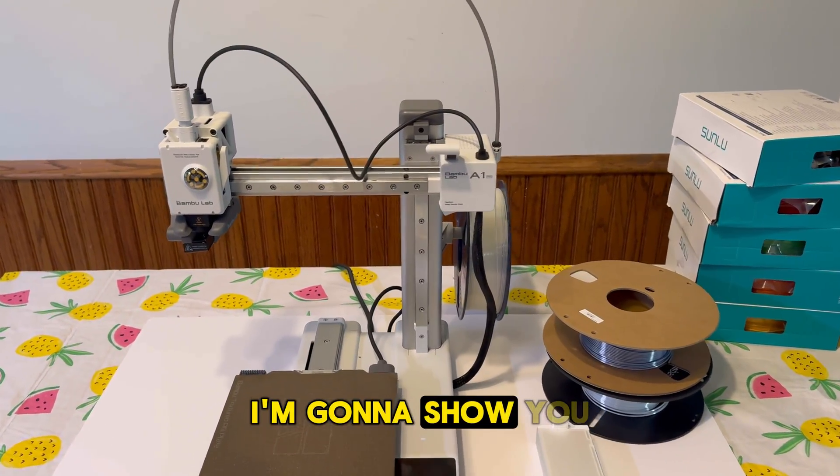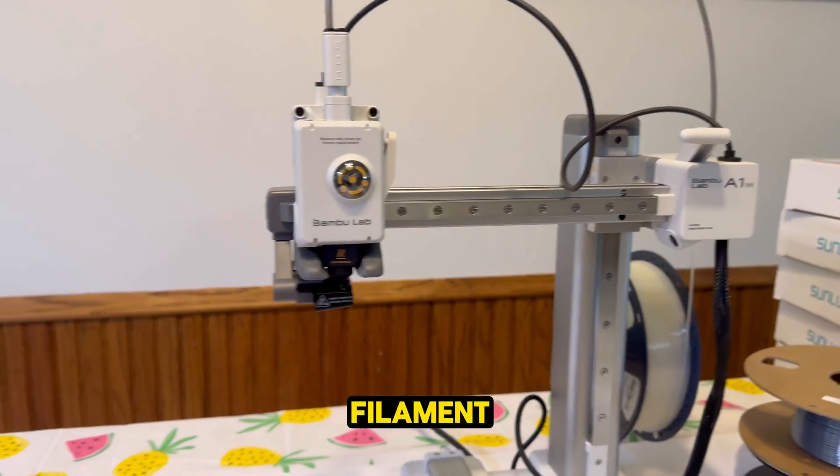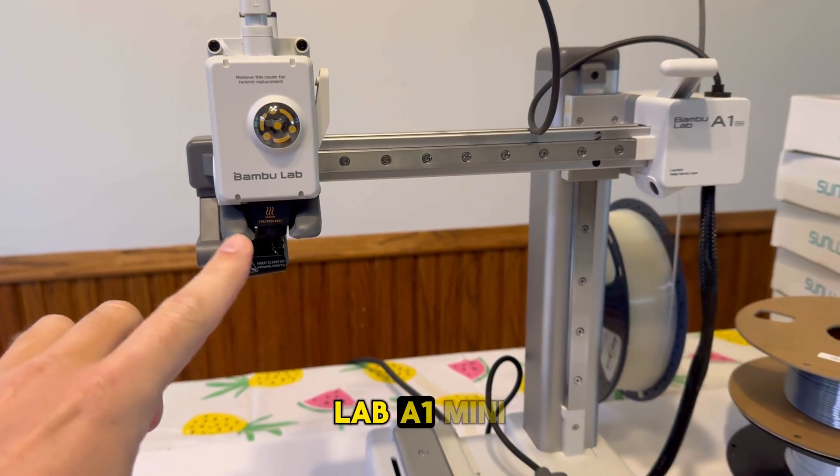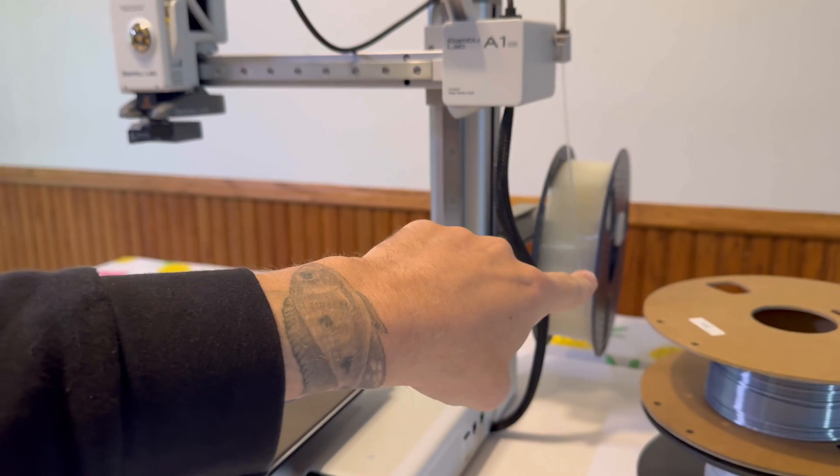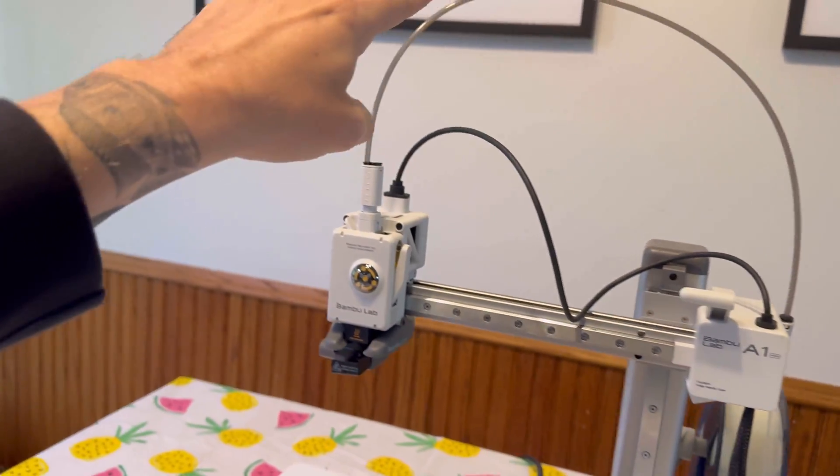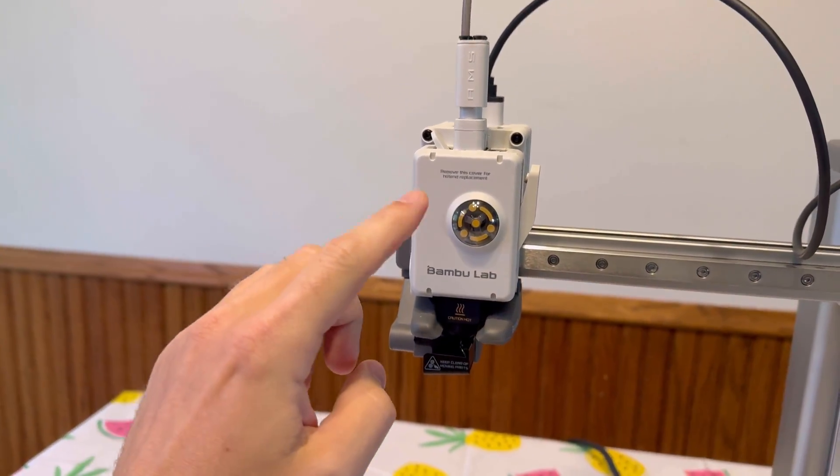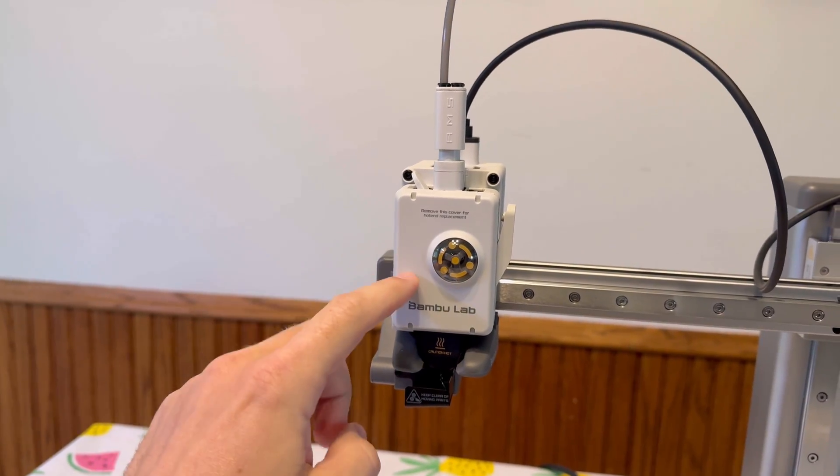What's going on guys? Today I'm going to show you how to clear broken filament stuck in your Bamboo Lab A1 Mini. So somewhere along the lines on the Bamboo A1 Mini here, the filament comes through here, right? And there's a clog in here. It's broken filament, it's stuck, we need to unclog it.